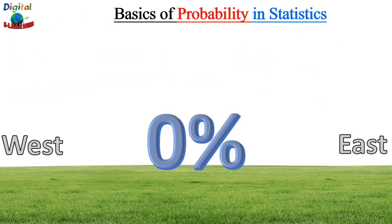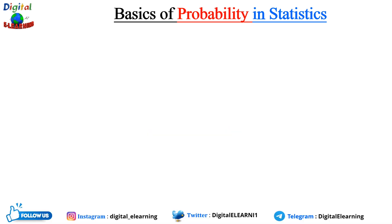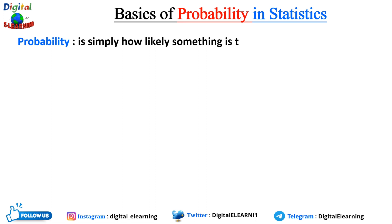But can the sun ever rise from the west and set in the east? Is it practically possible? It is not — it is a zero percent chance. So here we are talking about the probability of any event happening. Probability is simply how likely something is to happen, or the likelihood of a random event to occur.